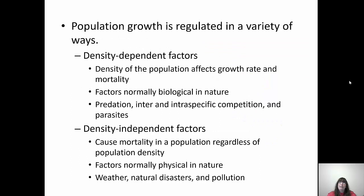Population growth is also regulated by density dependent and density independent factors. Resources are a big regulator — if resources are limited, competition becomes intense and resources start to deplete. Density dependent factors are those where the density of the population affects growth and mortality. If individuals are closer together, that hurts them. These are normally biological in nature — for example, parasites and disease. If a population is densely packed, diseases spread much faster and can wipe out the population. Predation is another example — if organisms are close together, it's easier to prey on them.